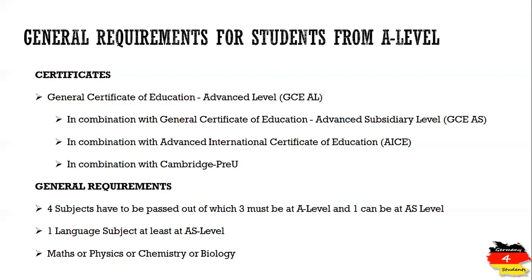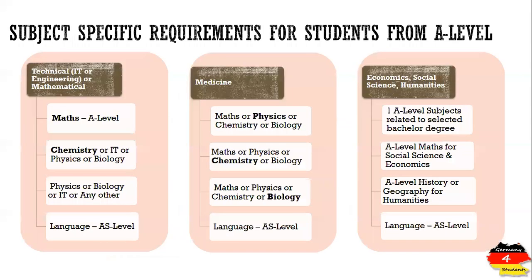Out of the four subjects, you must also have at least one subject from maths, physics, chemistry, or biology. So to summarize: four subjects total, one can be at AS Level and three at A-Level, with one mandatory language subject and at least one science/maths subject. Students may be planning to study engineering, medicine, economics, business administration, or humanities — let's look at the subject-specific requirements for each to get direct admission into a Bachelor degree in Germany.